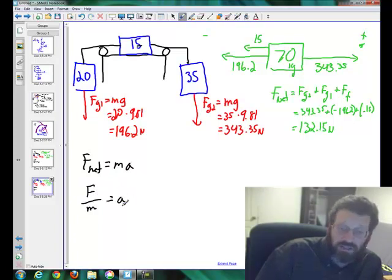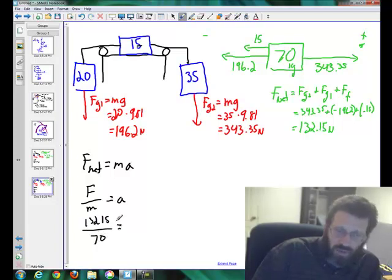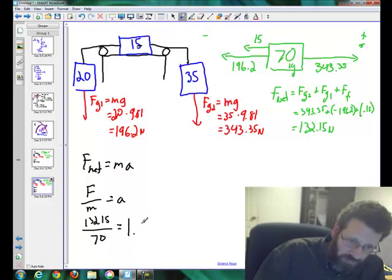So that'll be 132.15 over 70. It's still the system. The whole system will be accelerating at the same rate, and I get 1.89 meters per second squared.